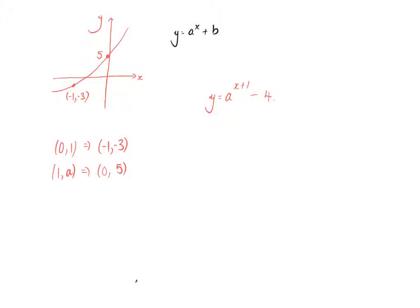So then we can put our values in. When x is 0, we know that y is 5. So we're going to have 5 equals a^(0+1) minus 4.